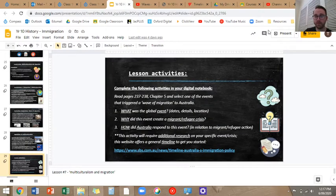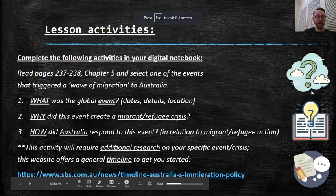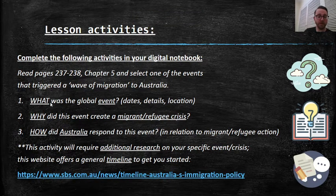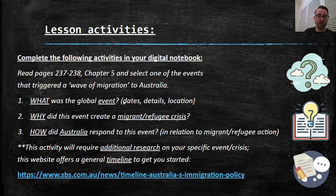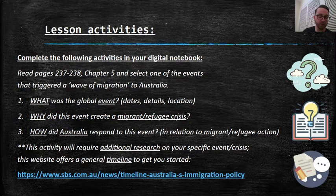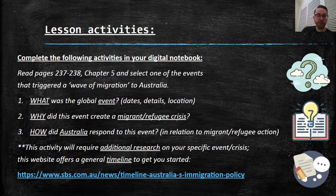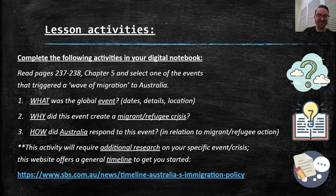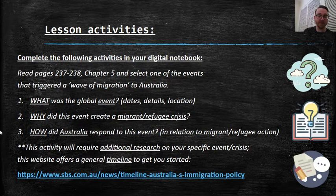Step one: select an event relating to waves of migration in Australia and tell me what that event is — educate Mr. Tapley. What was the Vietnam War? What was Tiananmen Square? Give me the key dates, details, and location. Question two: why did this event create a migrant or refugee crisis? Why did it lead to lots of people needing to find a new home — was it political oppression, fleeing violence, a natural disaster? Question three: how did Australia respond to this event? In some cases Australia said 'come on in,' in others it said 'stay back.' As Australia's migration policy changed over time, our response to migrants was quite different. You will need a little bit of extra research to help answer some of these questions.